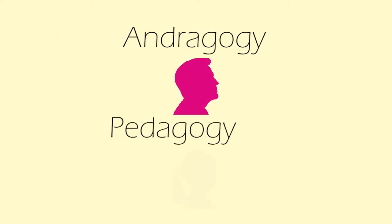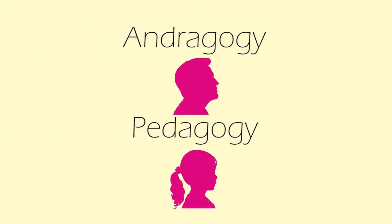Noel used the term andragogy — or how adults learn — to distinguish it from pedagogy, which was how children learned. Noel's theory raises a number of questions: does it describe how people learn, or how they should ideally learn? And is it true that children and adults learn in completely different ways?